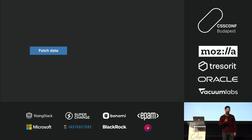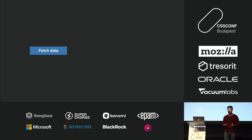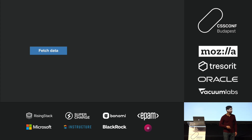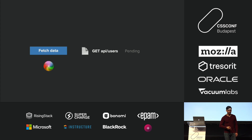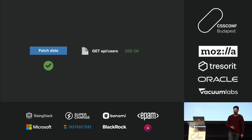Looking at application behavior and component styles this way is very limited, because we also have to think about how we transition between these states. Let's say we have this fetch button — the user clicks it, we're waiting for data and eventually get it. But what happens if the data takes a long time to load? Then maybe we want to show a spinner, and eventually we get our data.